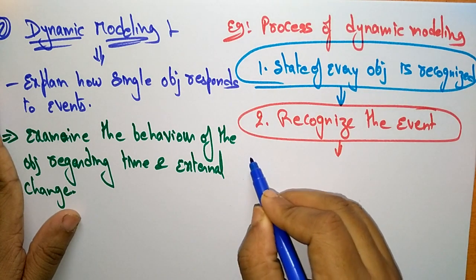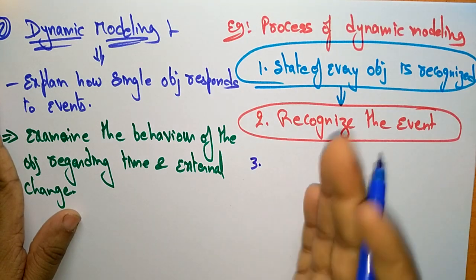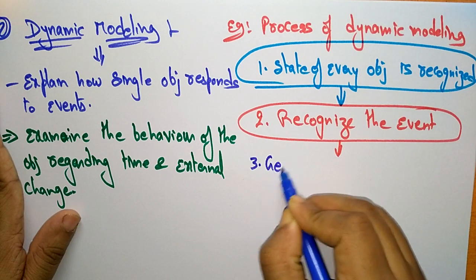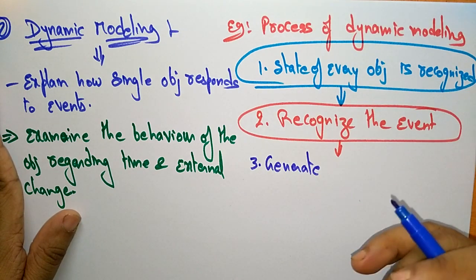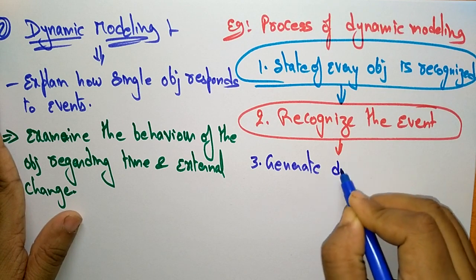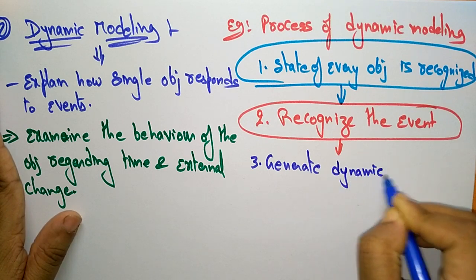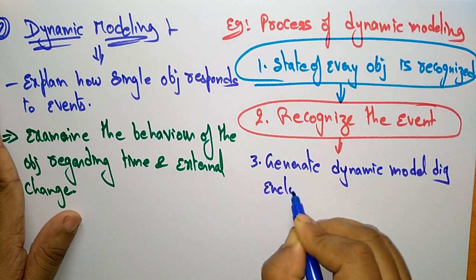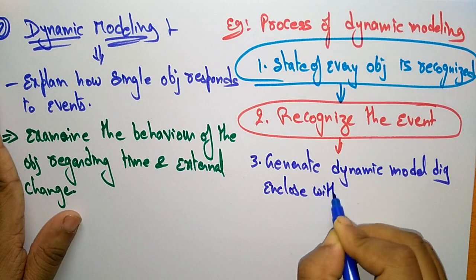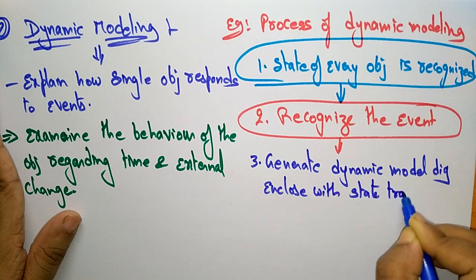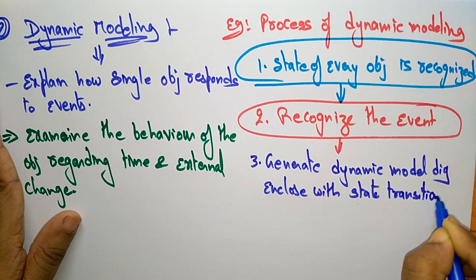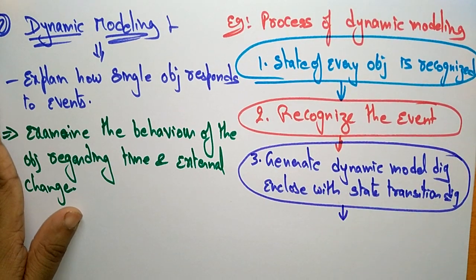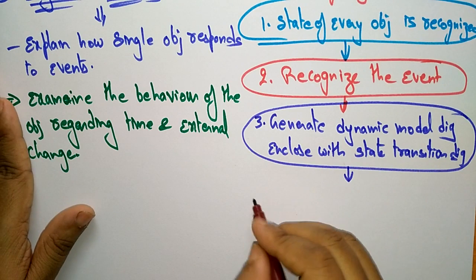The third step is to generate a dynamic modeling diagram enclosed with a state transition diagram. After recognizing the events, you generate the dynamic model diagram, which is enclosed with the state transition diagram.